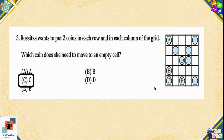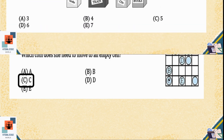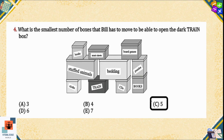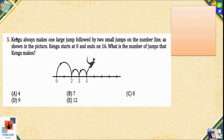Question number four: What is the smallest number of boxes that Bill has to move to be able to open the dark train box? To reach the train box, he will move the boxes of books, music sheets, and board games first. After that, he will move the boxes of stuffed animals and buttons. Then he can easily pick up the train box. He will move at least five boxes, so option C is the correct option.